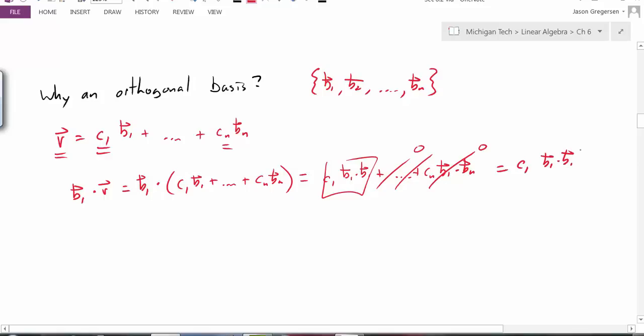And now I really have to just solve this for c1. Now remember, this dot product of B1 dotted with B1, that's just a real number. Because that's what my inner product does, it just outputs a real number. So I can divide by that real number. And so if I did that, and I solve this for c1, I would get c1 is equal to B1 dotted with V, divided by whatever that dot product was, B1 dotted with itself.